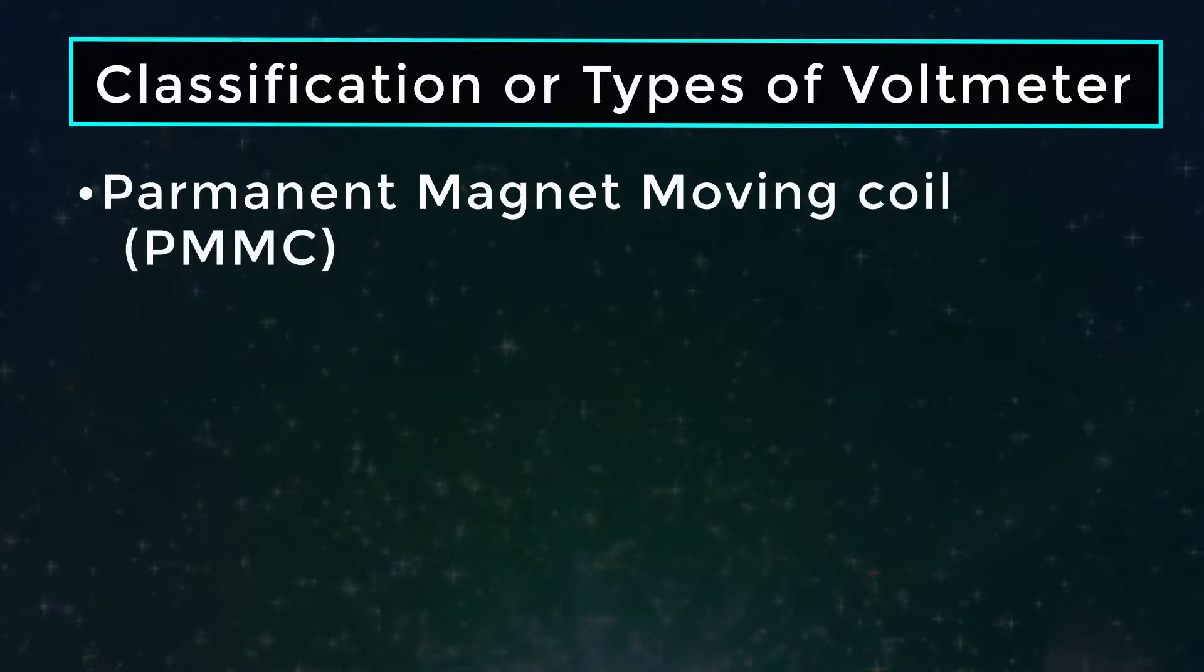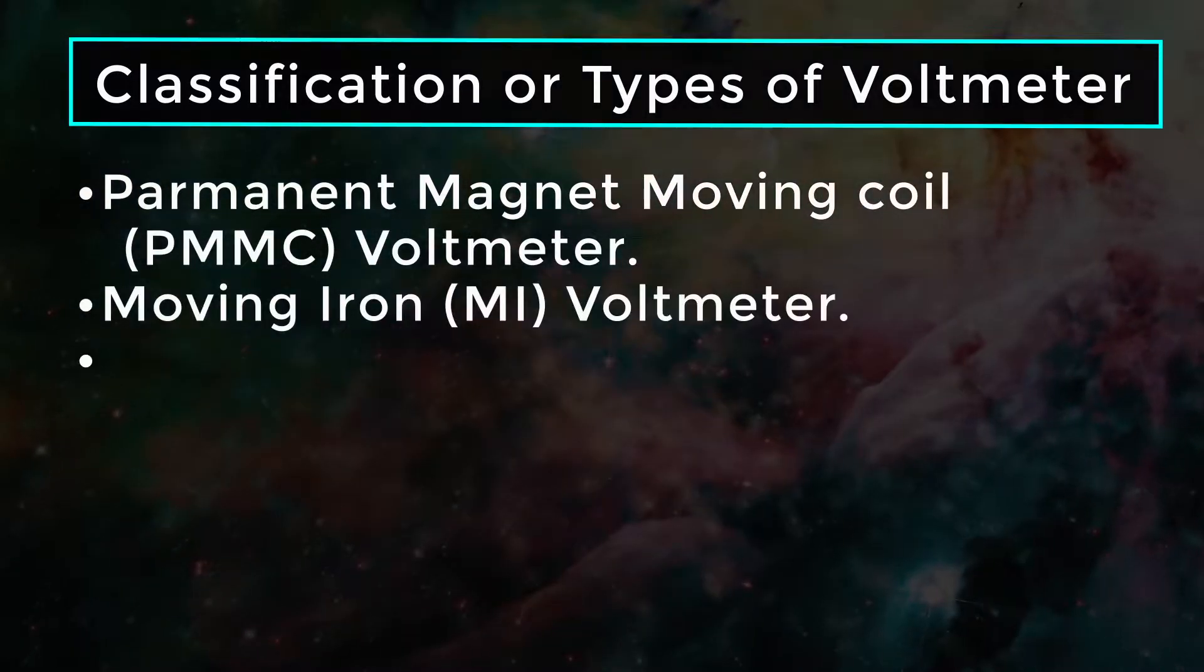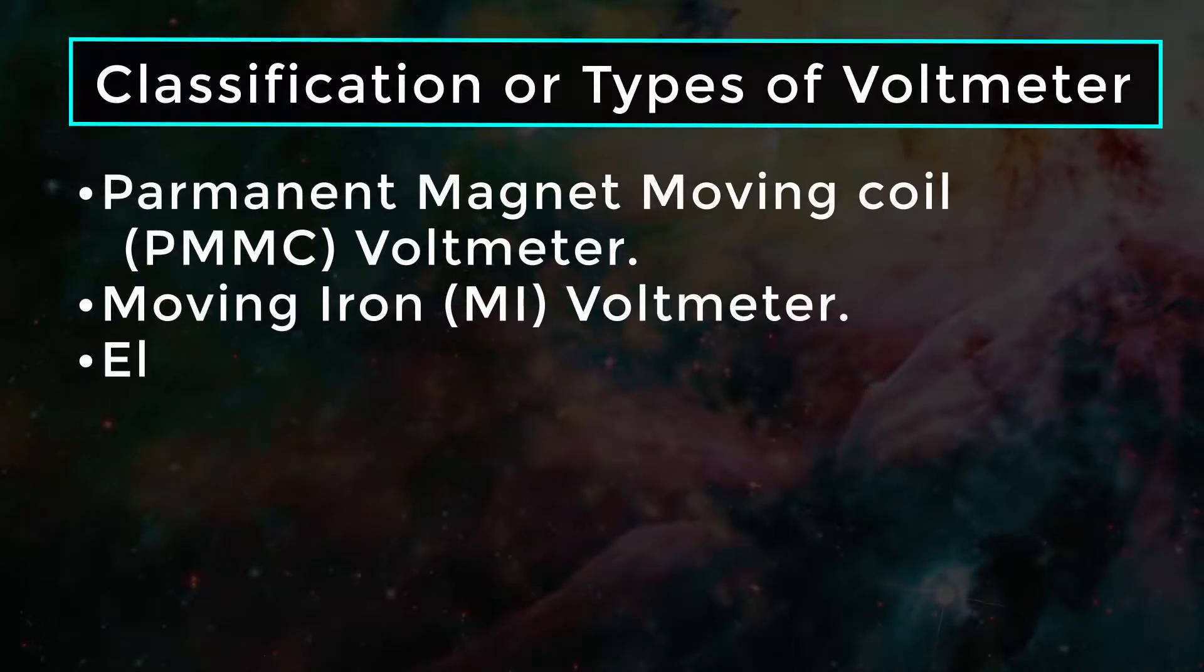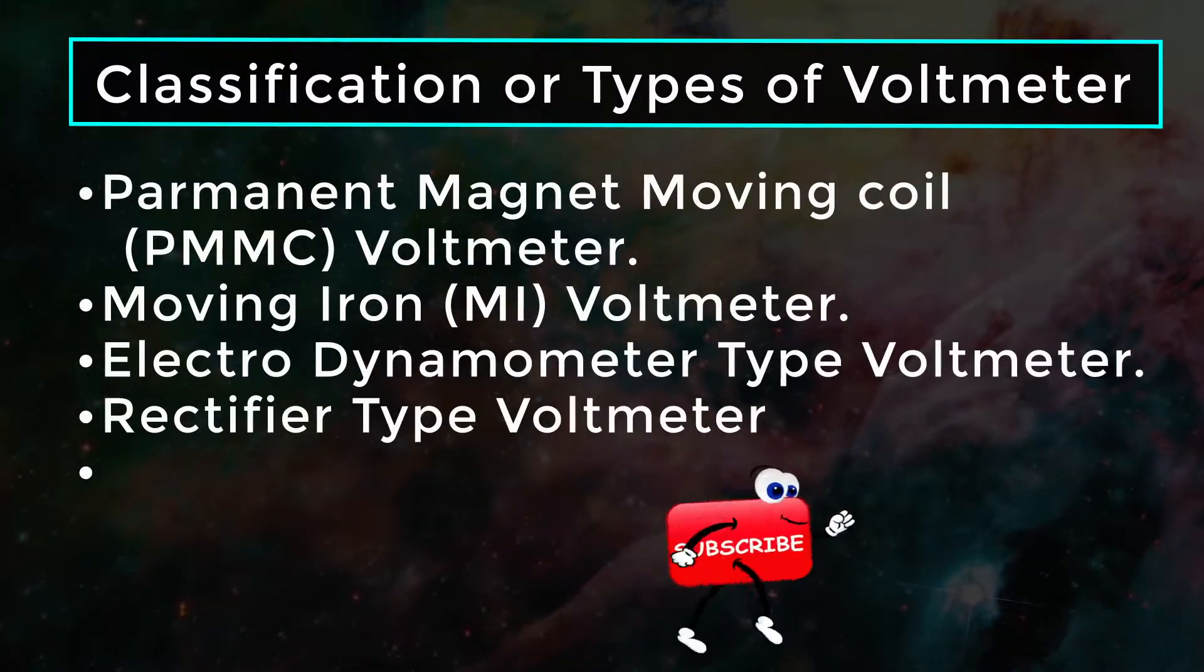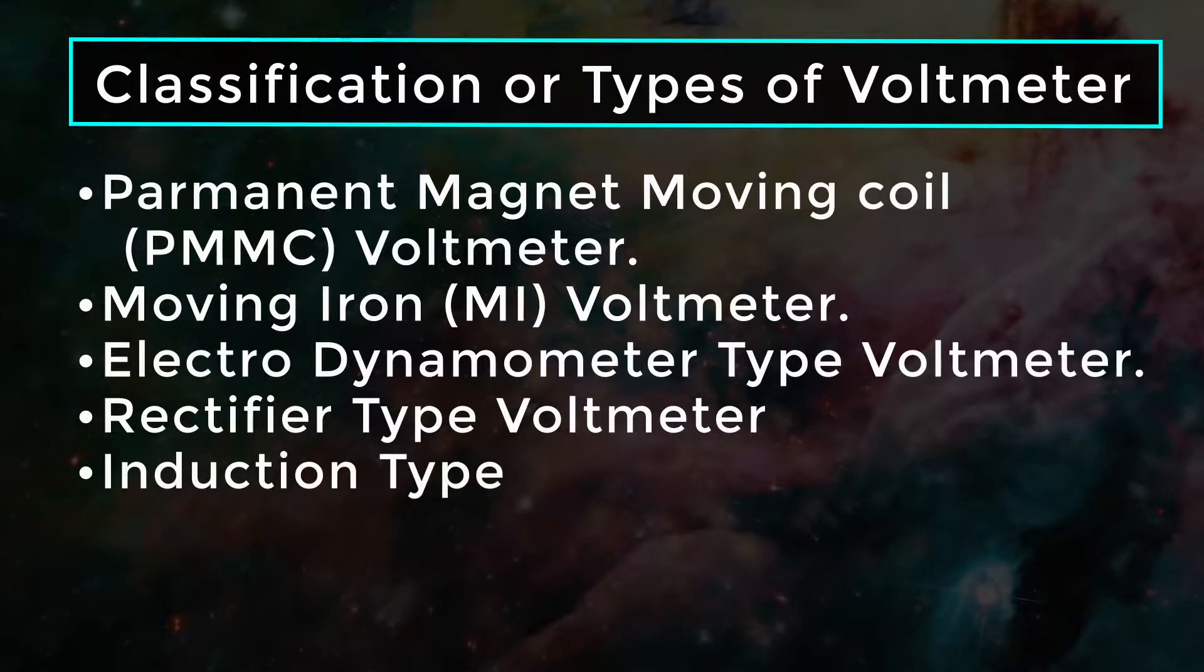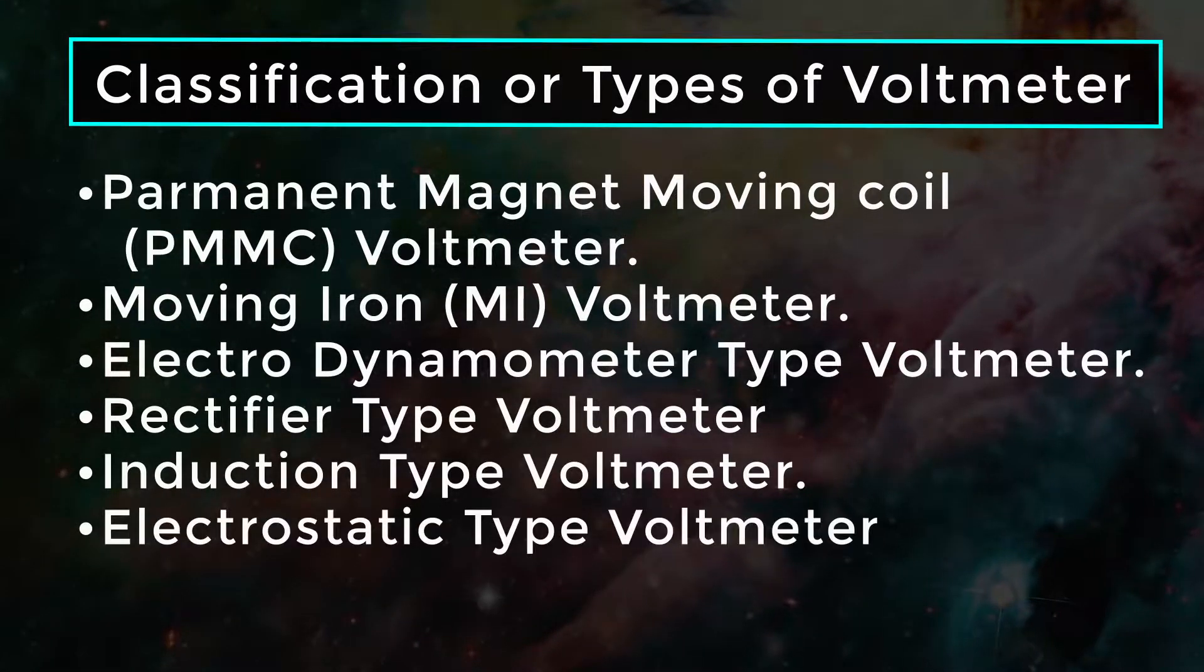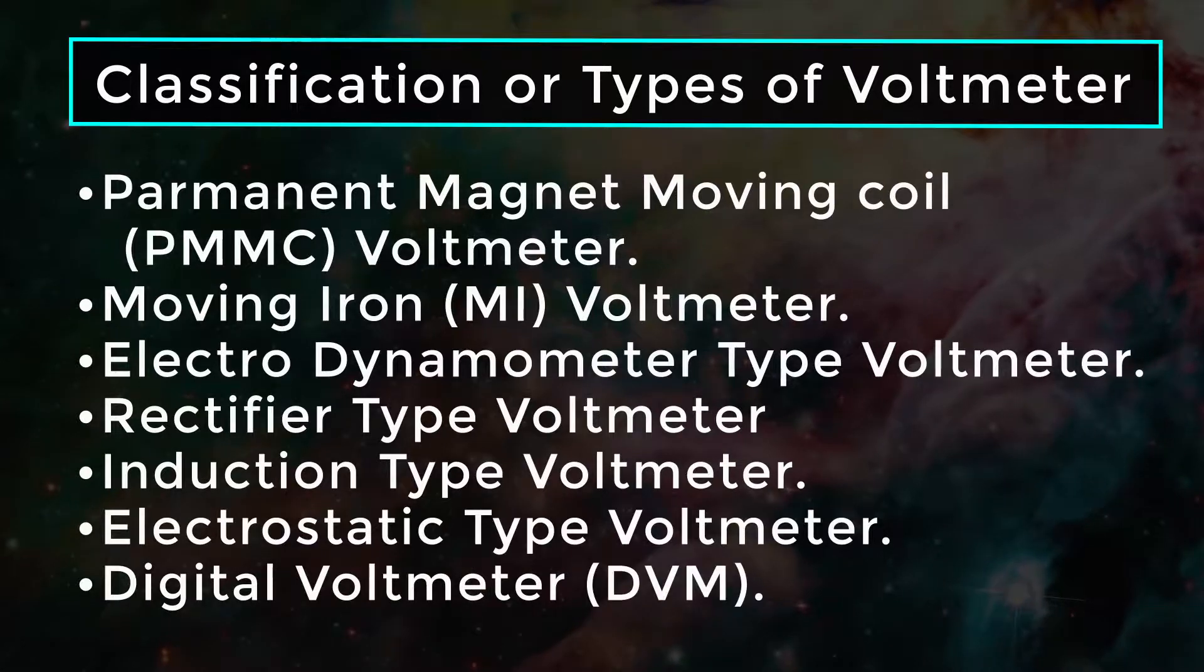Permanent Magnet Moving Coil PMMC Voltmeter, Moving Iron Voltmeter, Electro-Dynamometer type voltmeter, Rectifier type voltmeter, Induction type, Electrostatic type, and Digital voltmeter called DVM.